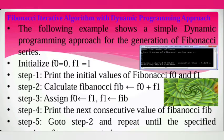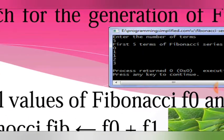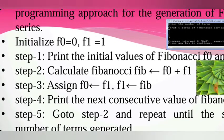For the Fibonacci series example: f0 is equal to 0, f1 is equal to 1 — these are initialized. In the Fibonacci series, the last two values are added to get the next value. The first five terms of the Fibonacci series are computed from these initial values.